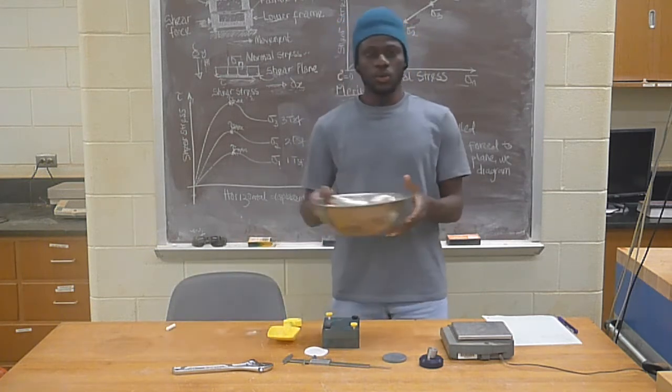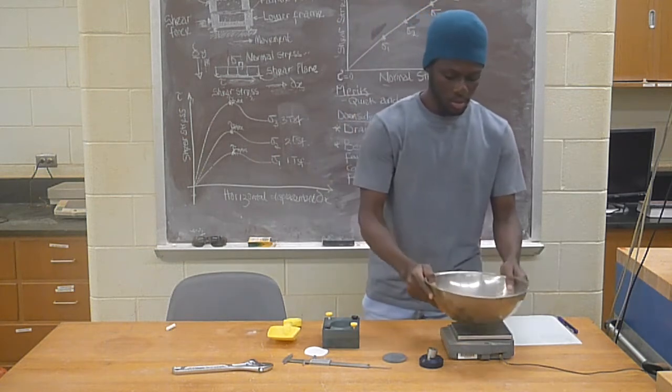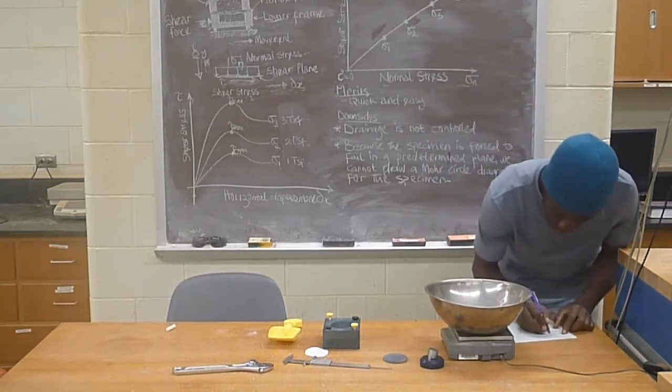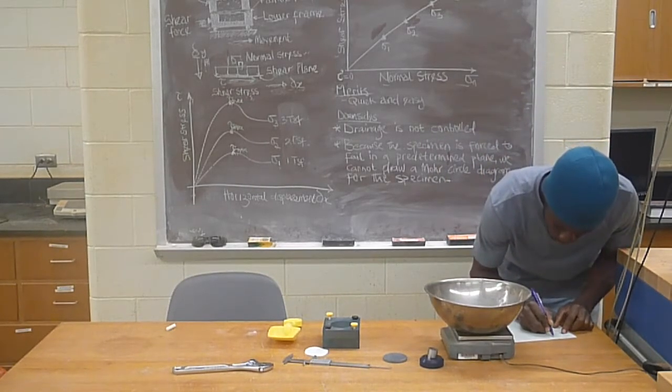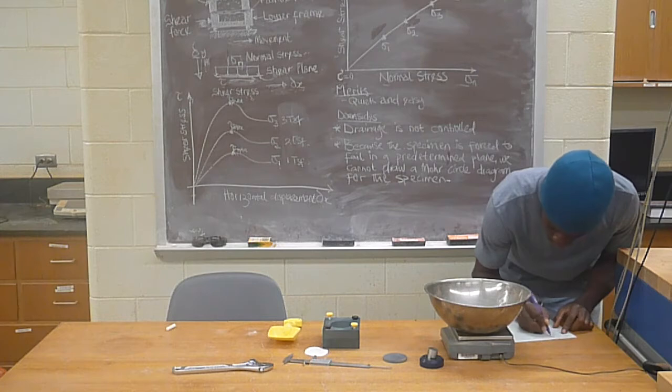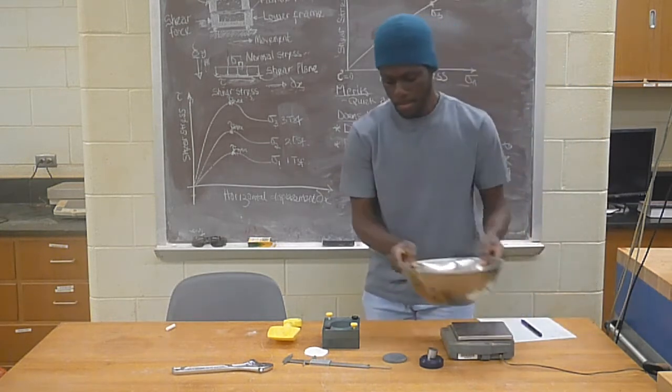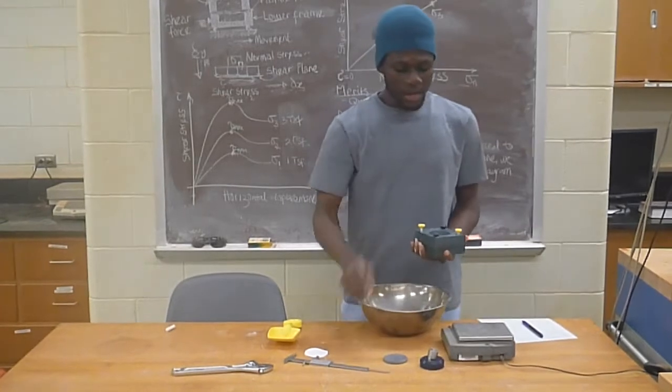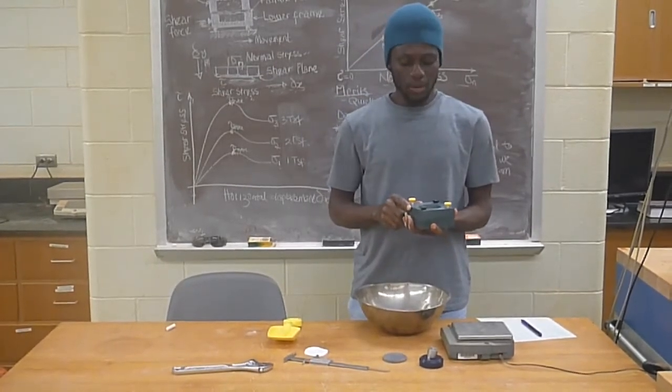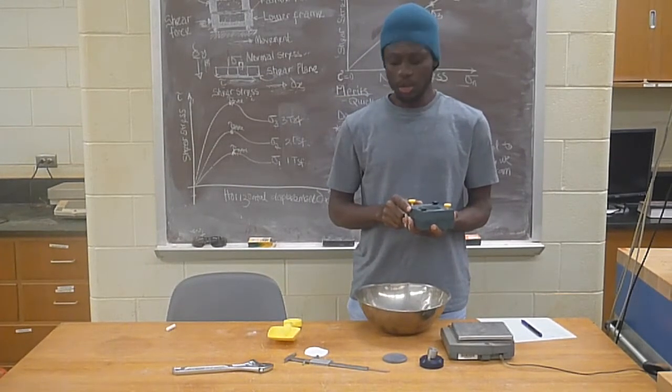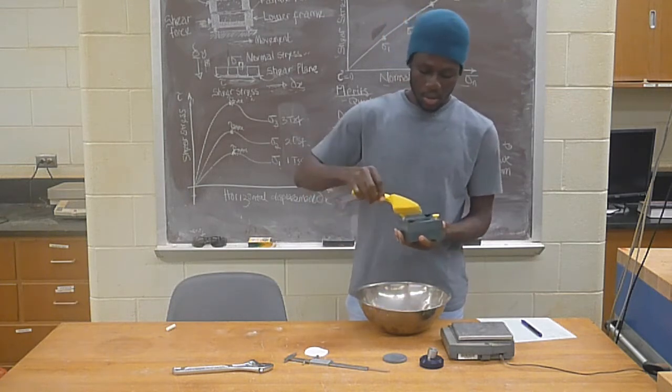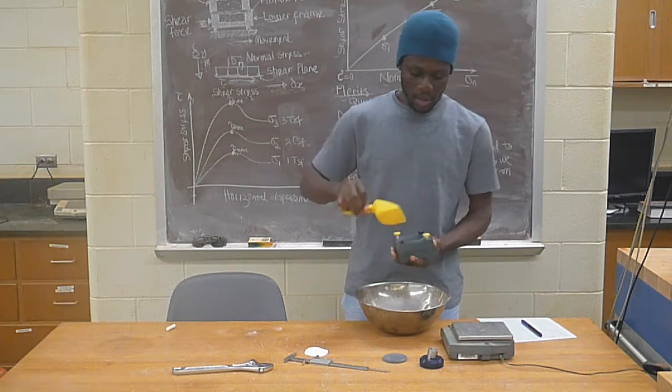Then I am going to weigh the sample. With the vernier caliper I have marked a height of one inch inside the shear box. Now I am going to place the specimen to that height.